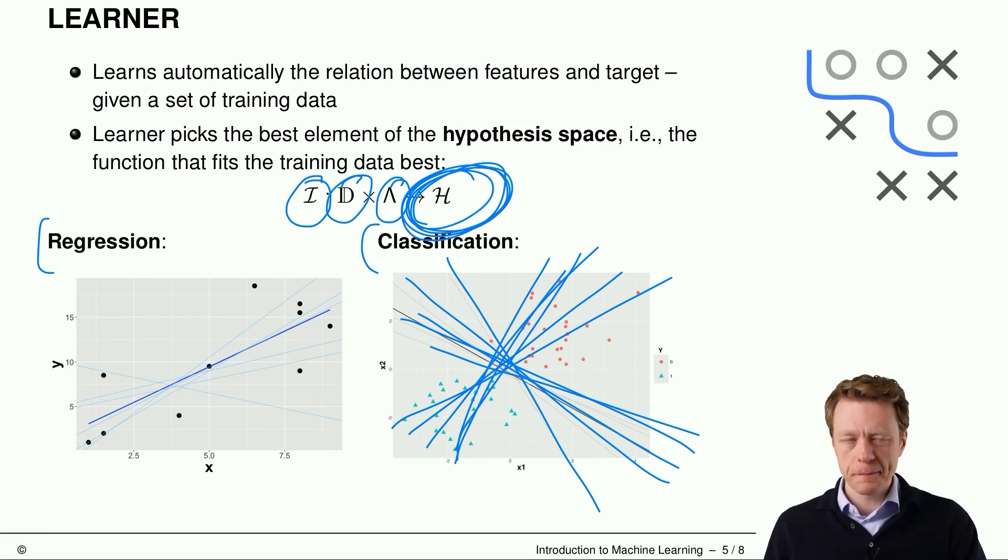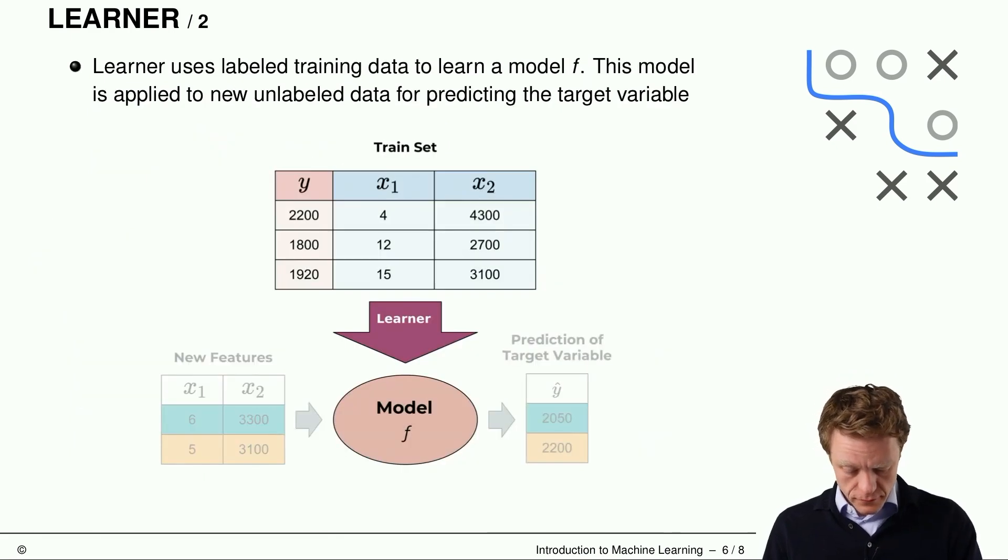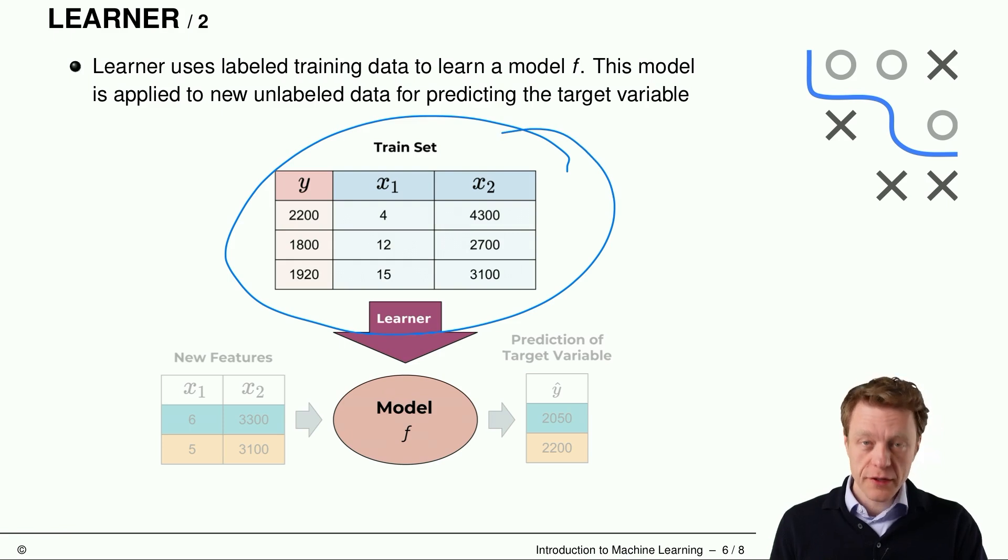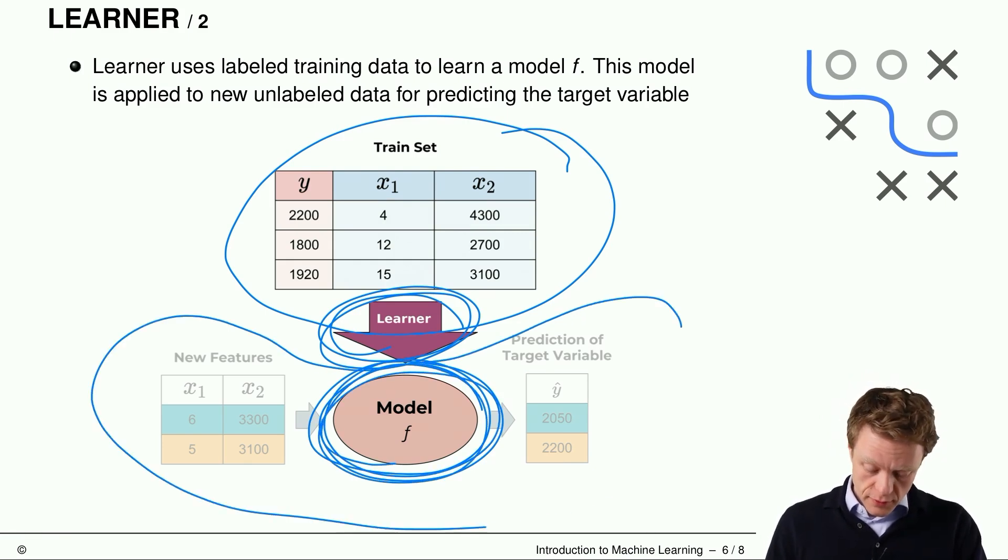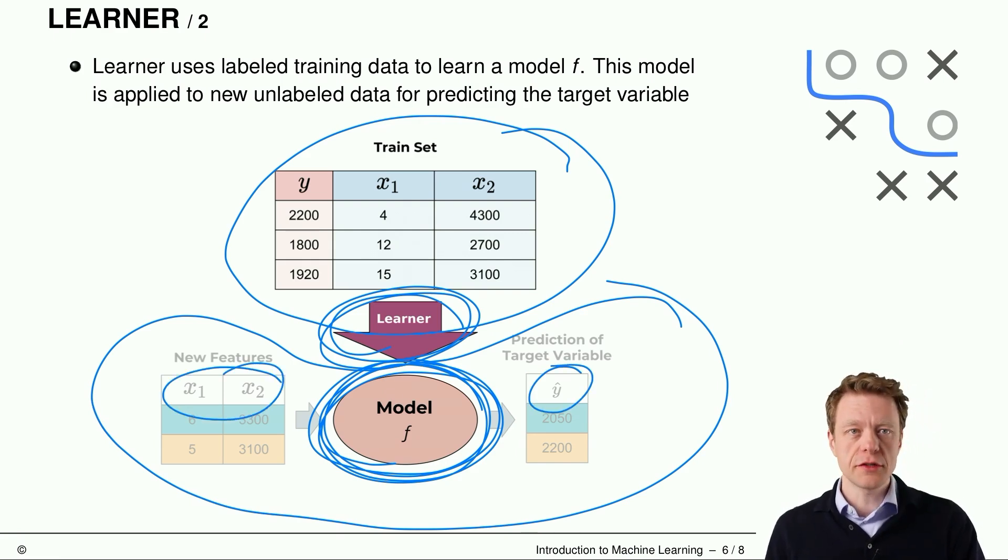So perhaps with this small figure here, we start with a training set where we have features and target. So we have labeled data and the learner delivers us the model f that we can use later for predicting y given new features.